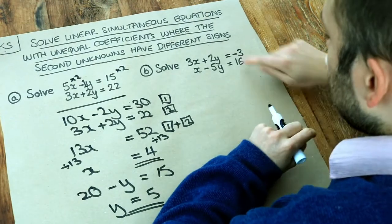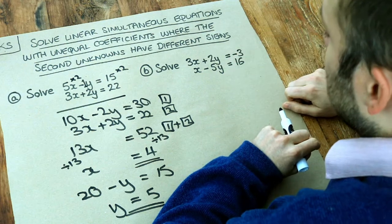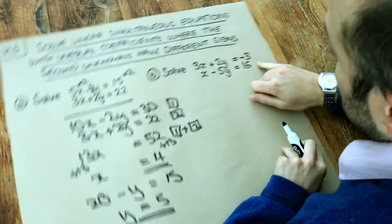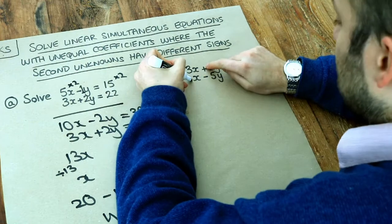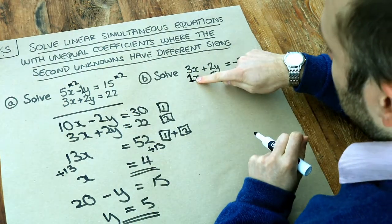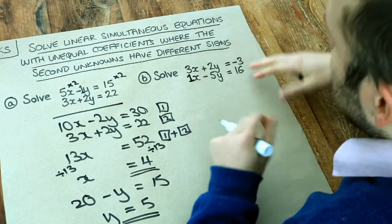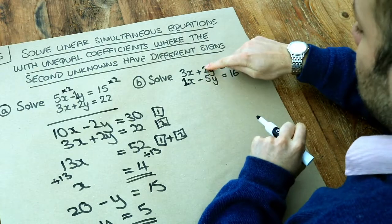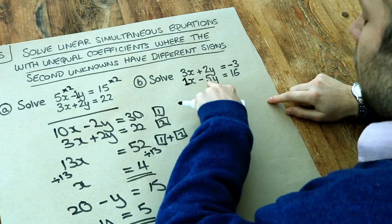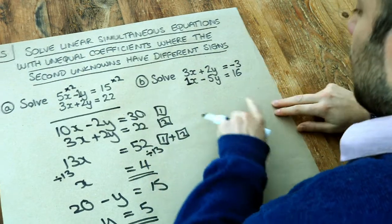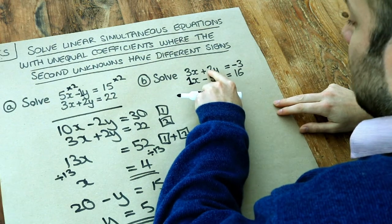What about this one? We've got 2 and 5 here, so we're going to have to scale both of them. It might be easier to make the numbers in front of the x the same because if that's 1, we could just times that by 3 to make it match that 3. But just for consistency, I'm going to make the y's match. So 2 and 5, what do they both go into? 10. So the 2, if I want to make that 10, I'm going to have to times it by 5.